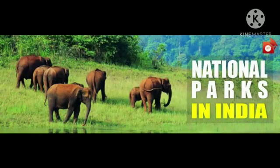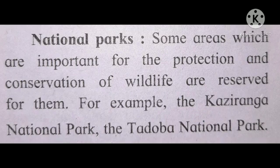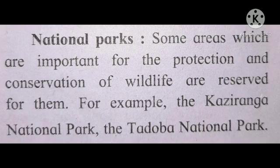Second comes national parks. We have heard a lot about national parks. One national park is also situated in Borivali, which you can visit. Some areas which are important for the protection and conservation of wildlife are reserved for that purpose. For example, the Kaziranga National Park and the Tadoba National Park — these are national parks mostly conserving wildlife.